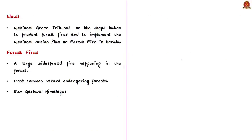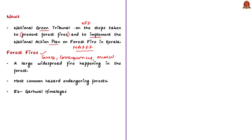In today's news item, the National Green Tribunal has given one month time to the Kerala forest department for submitting its report on the steps taken to prevent forest fires and to implement the National Action Plan on Forest Fires in the state of Kerala. In this context, let us discuss forest fires, their causes, consequences, and how to control them. A forest fire involves widespread fire happening in forest areas which usually burns away the existing flora and fauna.